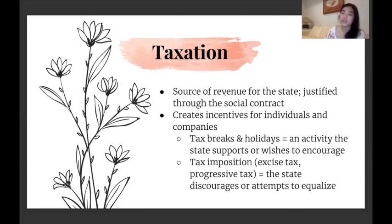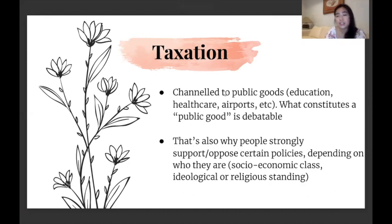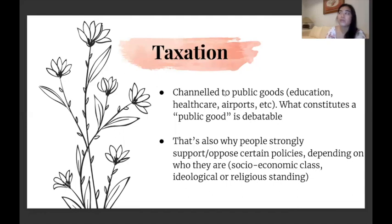This varies from country to country — that's why there's controversy in the United States that billionaires are not being taxed enough; certain nuances in each country's laws make it fairer or unfairer. Taxation is channeled to public goods ideally — things like education, healthcare, or airports. What constitutes a public good is highly debatable, which is why people strongly support or oppose certain policies depending on their socioeconomic class, ideological or religious standing. In America, extremely conservative people refuse Planned Parenthood coverage because they believe their taxes would be going to immoral things — so people have very strong opinions about where taxes go and how they're used.